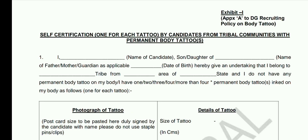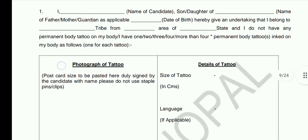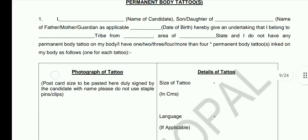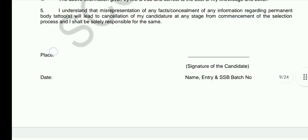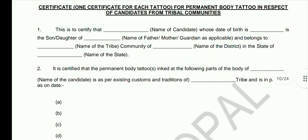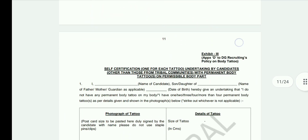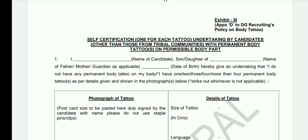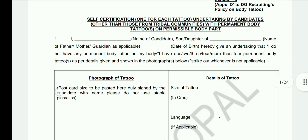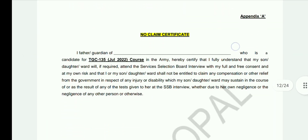The first appendix document is a self-declaration for candidates from tribal communities who have permanent body tattoos. They must declare each tattoo in this certificate — if more than one tattoo, declare accordingly. Candidates from non-tribal communities with any tattoo on their body must also declare this in the corresponding certificate.